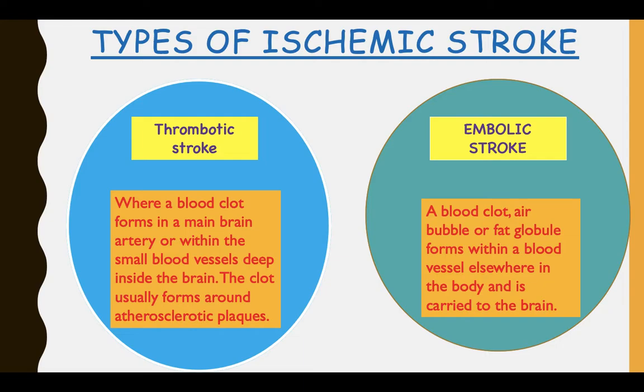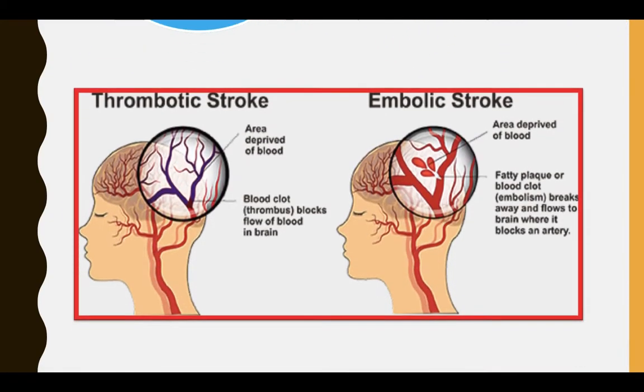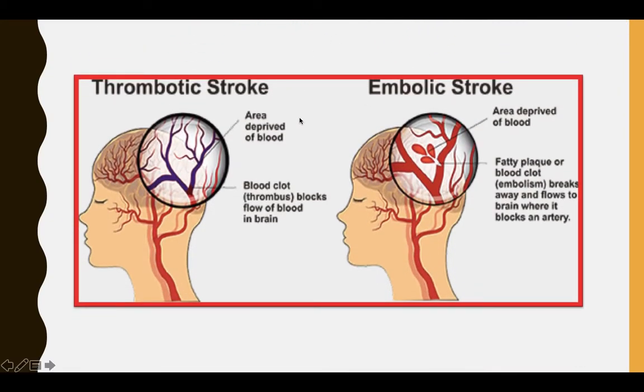Embolic stroke involves a blood clot, air bubble, or fat globule that forms within a blood vessel elsewhere in the body and is carried to the brain. A picture of thrombotic stroke and embolic stroke is shown here.